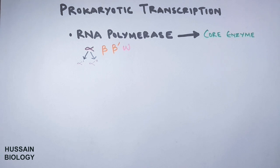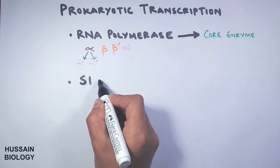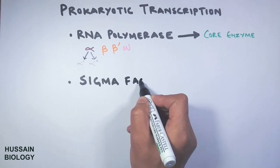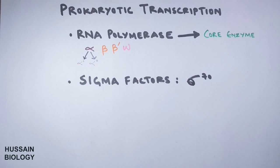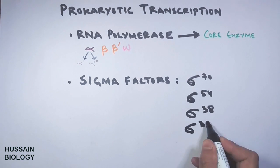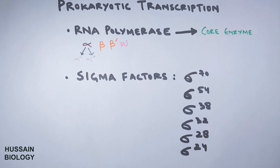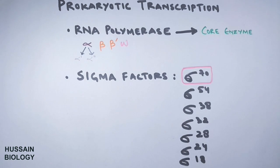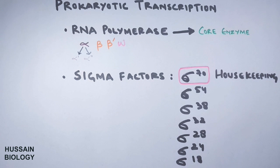For this enzyme to work we have sigma factors, and E. coli has seven different sigma factors: sigma 70, sigma 54, 38, 32, 28, 24, and 18. Sigma 70 is called the housekeeping sigma factor since it is involved in the transcription of all major genes.